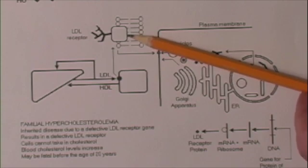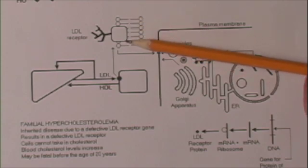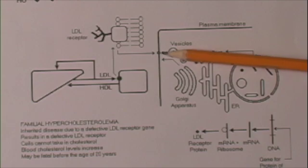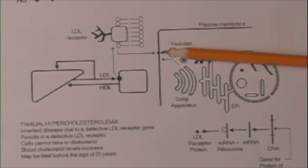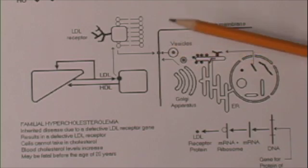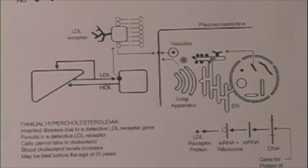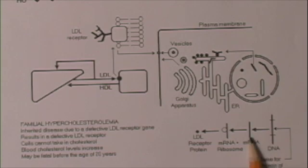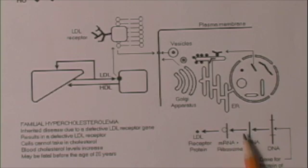Now, where does that receptor come from? Notice this is a little part of a cell membrane, and what we've done is to enlarge the surface of this cell to show the receptor. The receptor is produced by protein synthesis. There's a gene for one or more of the proteins in the LDL receptor. The gene is turned on, messenger RNA is produced by transcription, the messenger RNA moves out into the cytoplasm, binds with the ribosome, and by translation, the amino acids are linked together to form the LDL receptor.